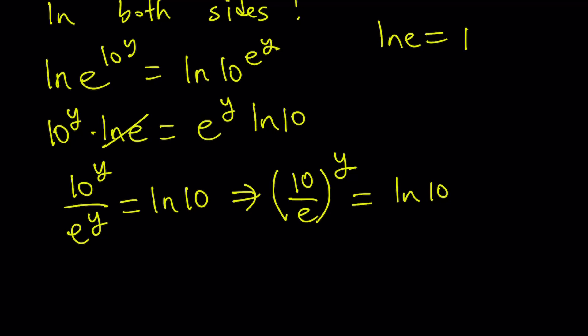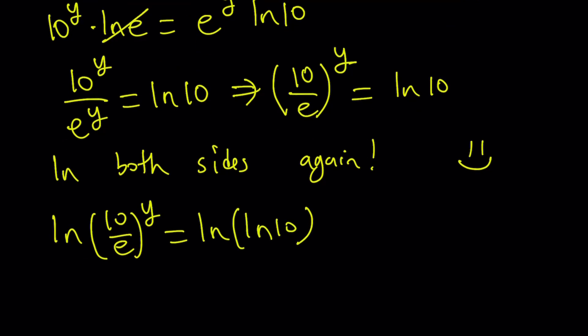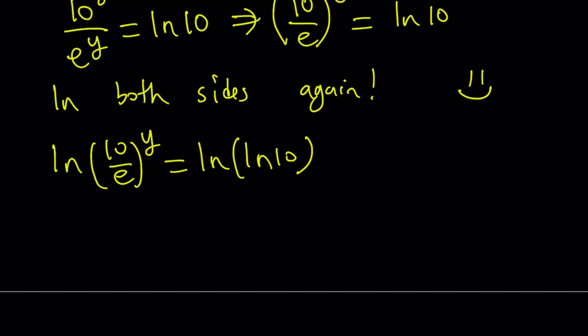10 over e is a constant. ln 10 is a constant. So we kind of have something like a to the power y equals b. So in order to solve for y in an equation like this, you either have to use the definition of logs or just log both sides. But I'm going to use ln. So let's ln both sides one more time. And if we do, we get ln 10 over e to the power y equals ln ln 10. So it's kind of like double ln. And the y can be moved. So y times ln 10 over e equals ln ln 10.